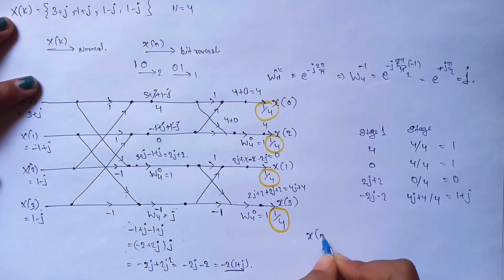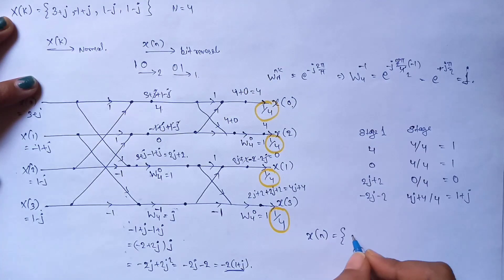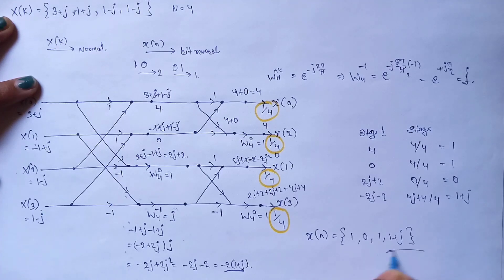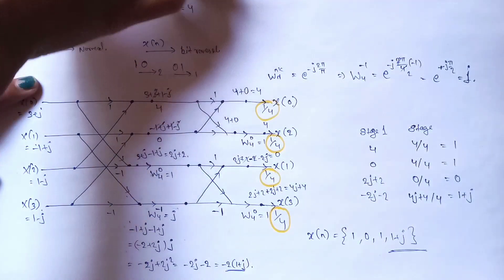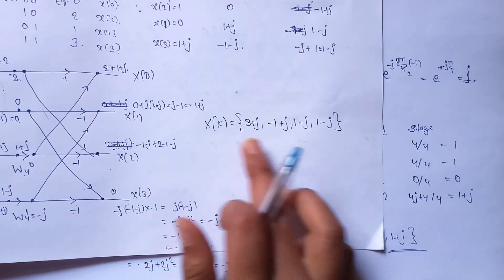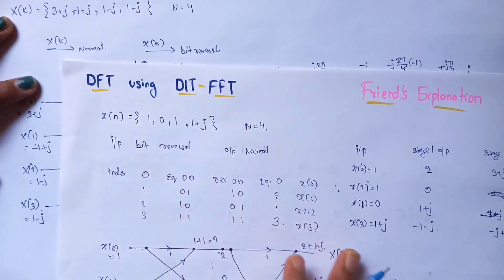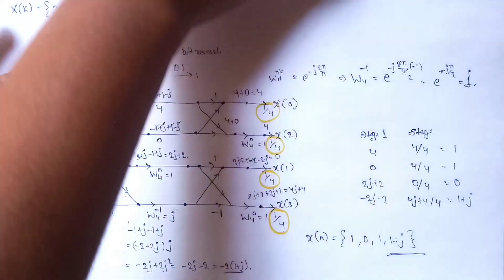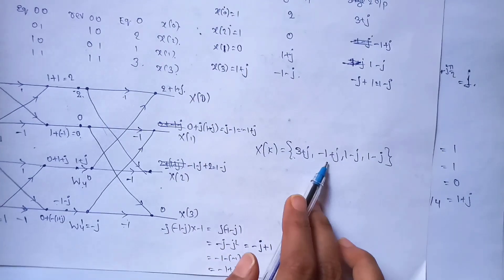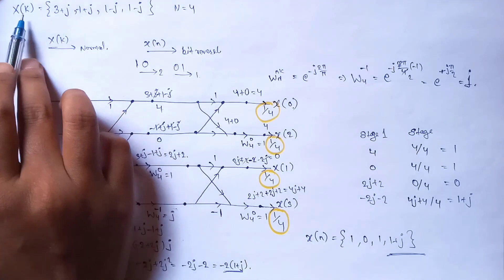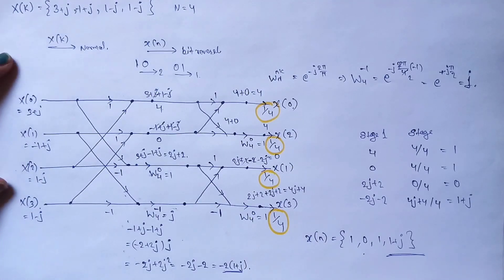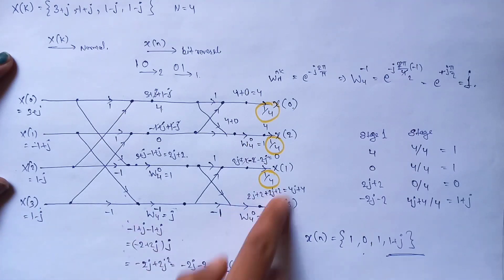So the original sequence is: x(0)=1, x(1)=0, x(2)=1, x(3)=1+j. This is the recovered time-domain sequence. As you can see, in the previous video this was the original input sequence, and when I applied the DFT I got the frequency-domain sequence. Now applying the IDFT on that frequency-domain sequence, I recovered the original sequence — so you can see how they are inverses of each other.